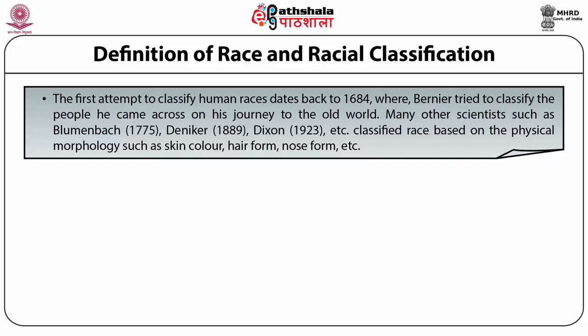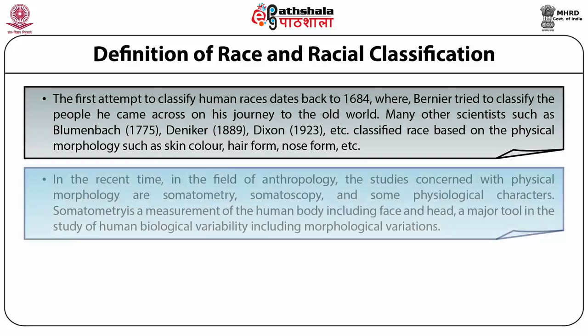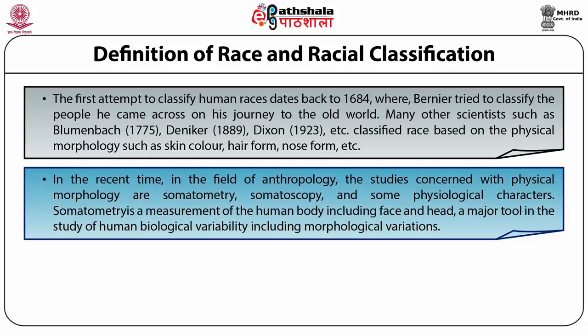In the 19th century, attempts were made to change the concept of race from a taxonomic to a biological concept, such as using anthropometrics invented by Francis Galton and Alphonse Bertillon. In recent times in the field of anthropology, the studies concerned with physical morphology are somatometry, somatoscopy, and some physiological characteristics.